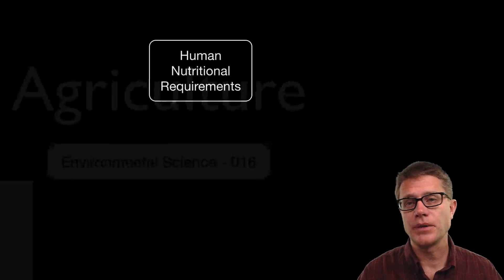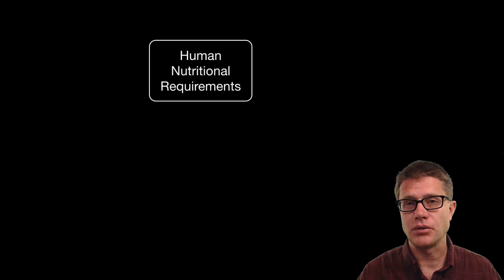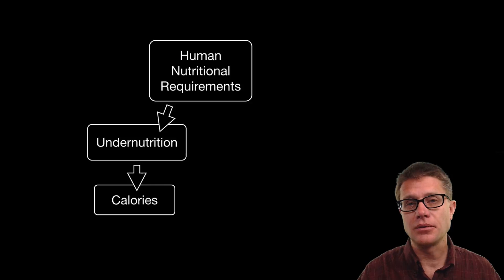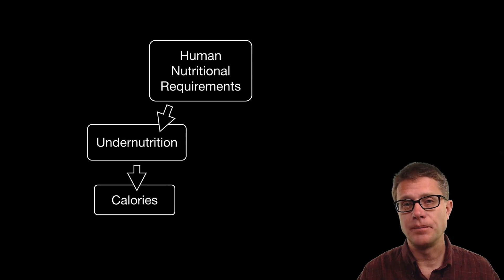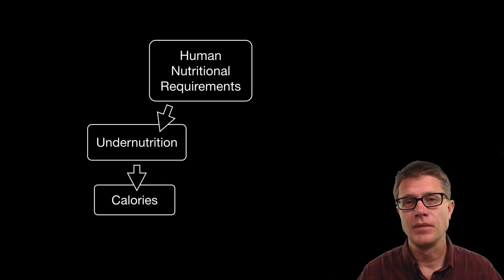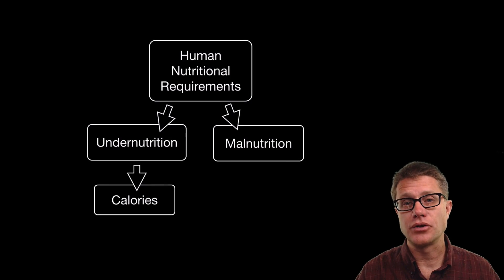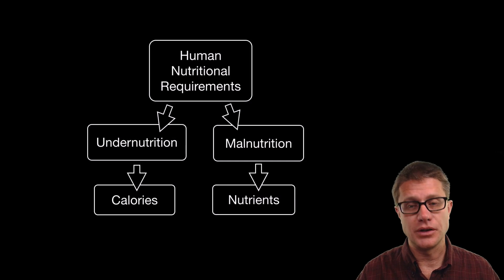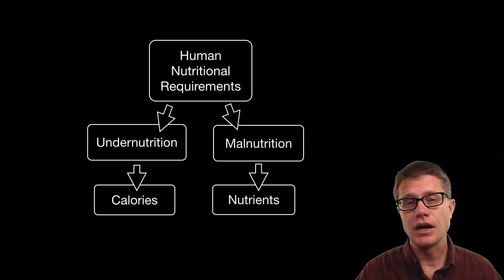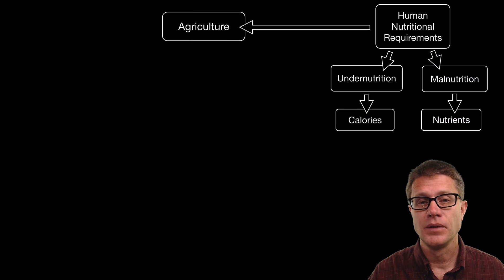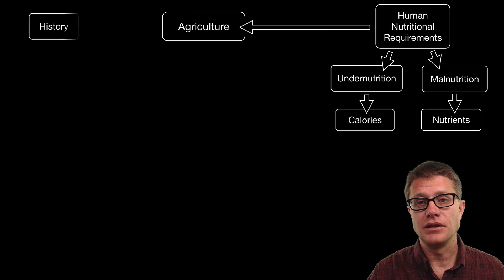What is the function of agriculture? It is to provide for our human nutritional requirements. If you do not get enough calories in your diet, we call that undernourishment. It is less of a problem — we generally can make enough food, but it is not always in the right place at the right time, and things like war can disrupt that flow. A bigger problem is malnutrition — when you are not getting the proper nutrients, the right proteins, vitamins, and minerals in your diet. A growing problem is actually overnutrition, where we eat too much and it can lead to things like obesity. Agriculture provides for these needs and has been doing so for thousands of years.